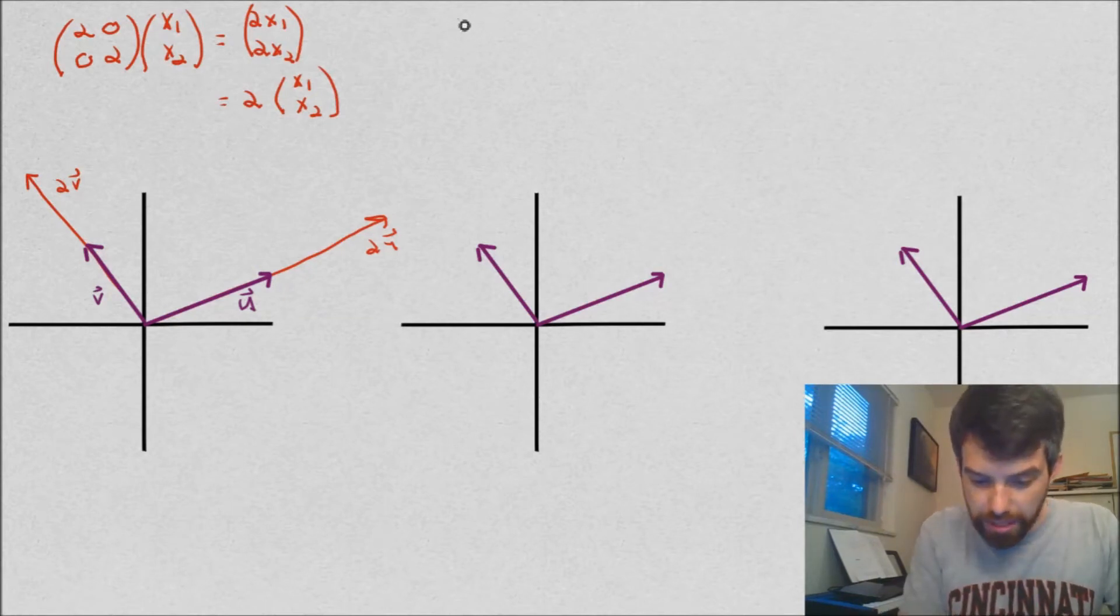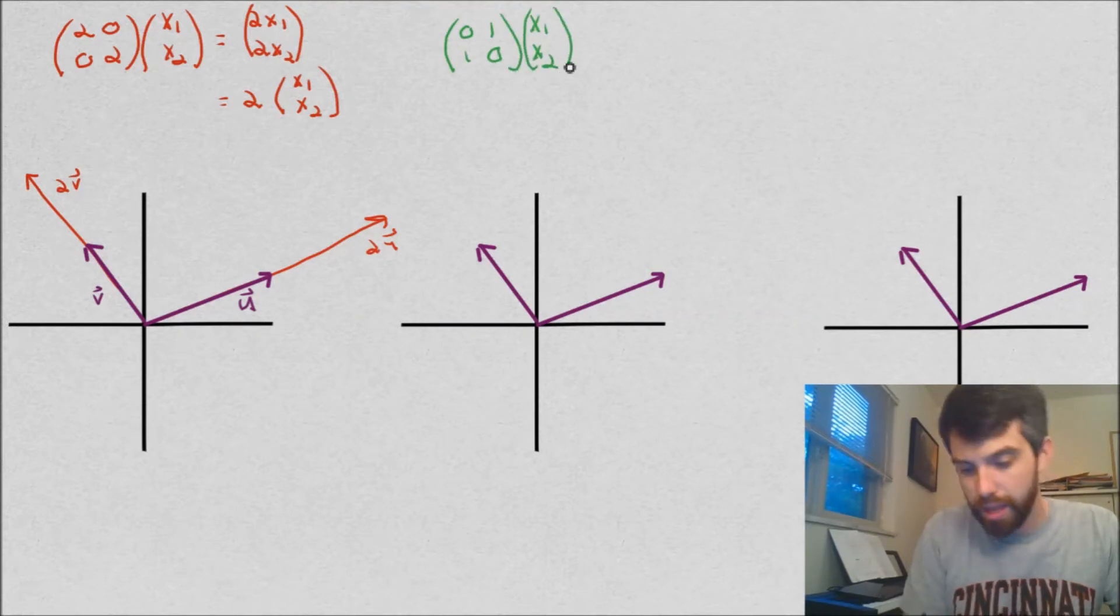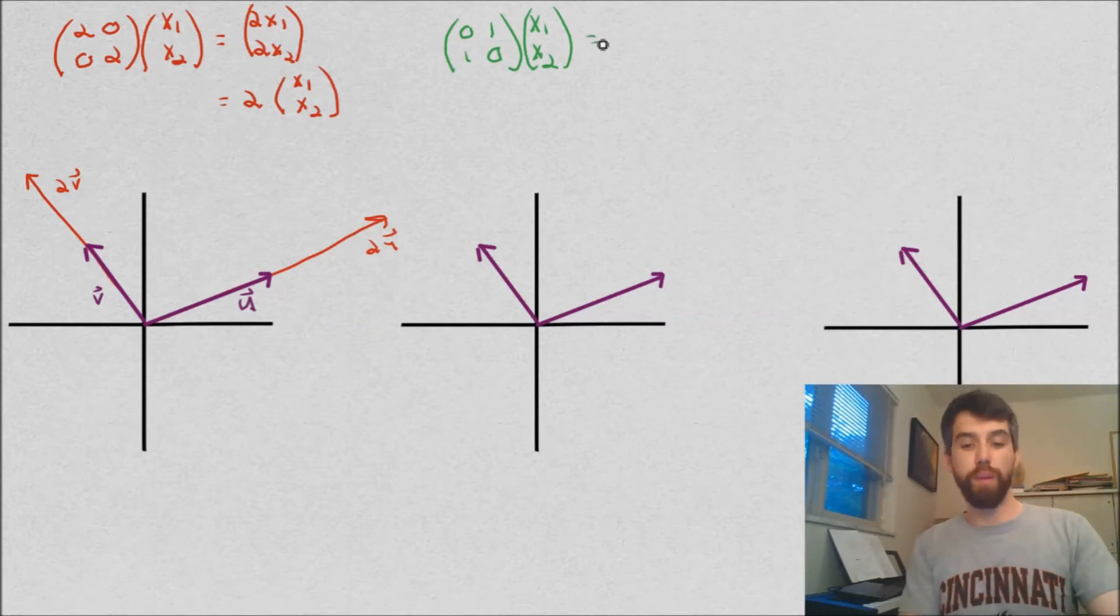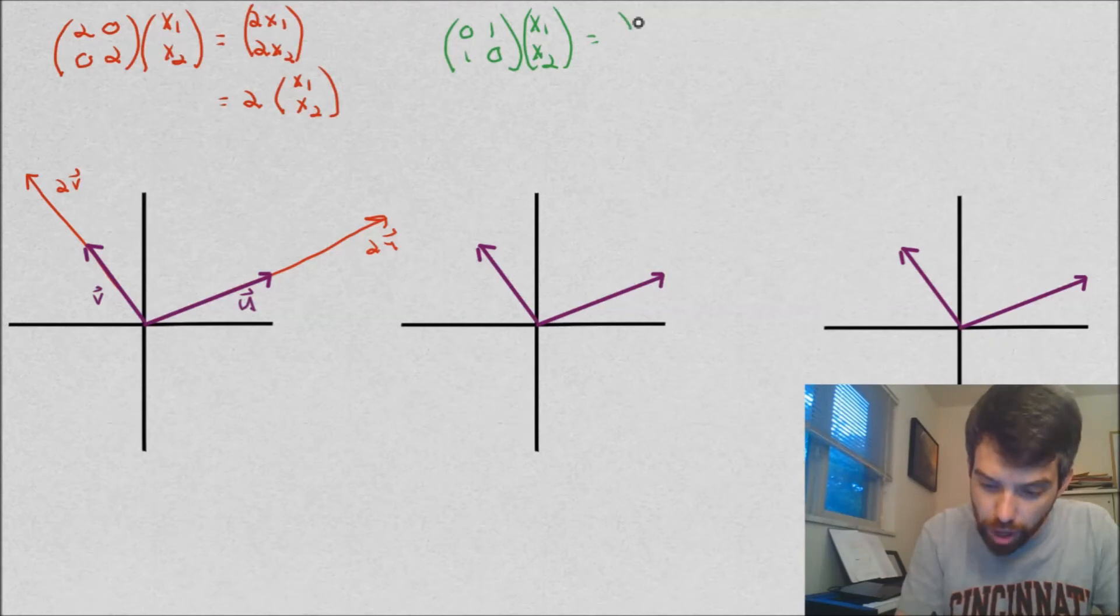Alright, next example. I'm going to take this matrix [0, 1, 1, 0] and I'm going to apply that to (x1, x2). And what happens here if I do my multiplication, 0 times x1 is going to be 0, and then I get an x2 up on the top here. And then x1 and 0, I get an x1 on the bottom.